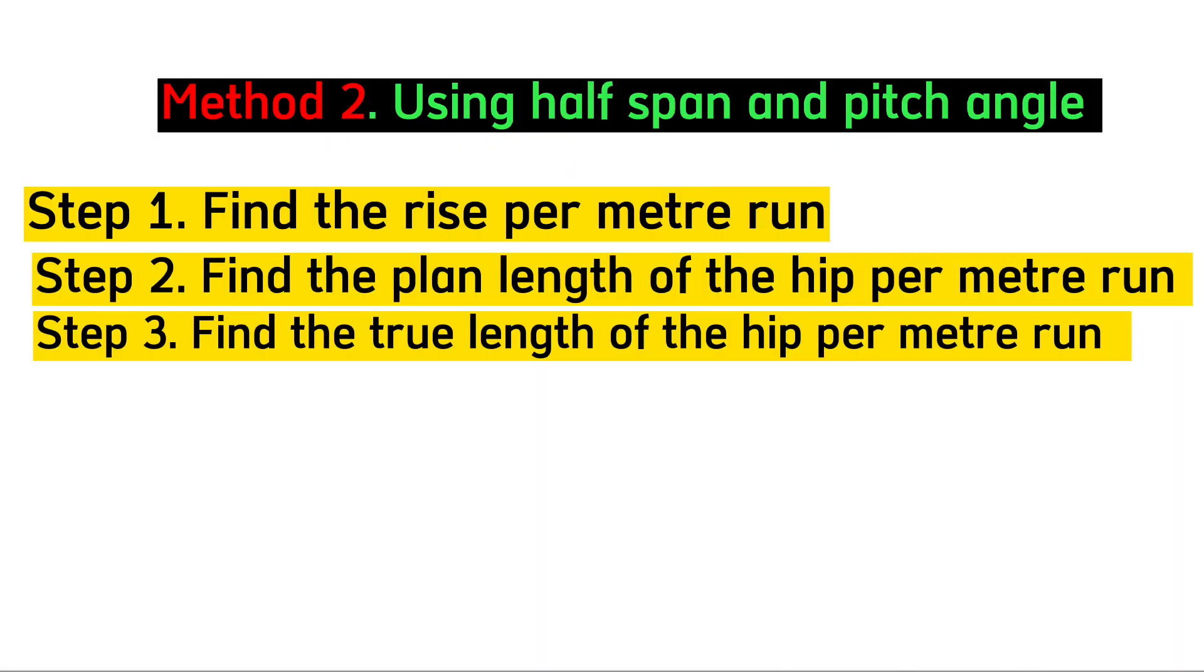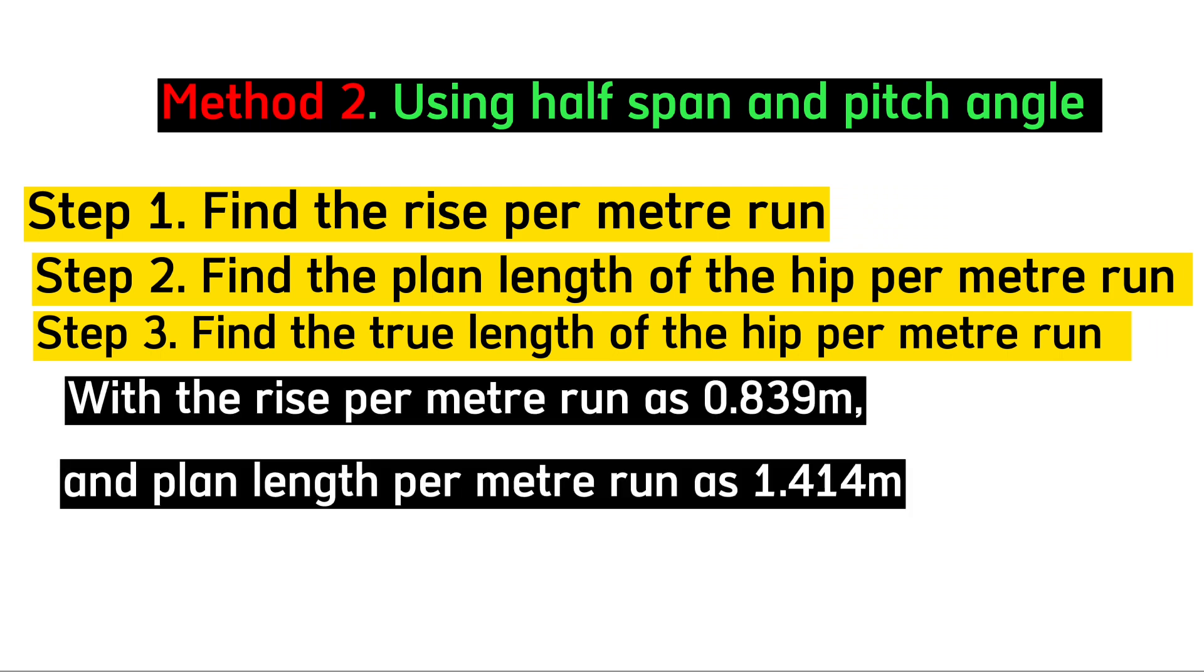The third step is to find the true length of our hip per meter run. With the rise per meter run as 0.839 meters and our plan length per meter run as 1.414 meters, we can determine the true length of our hip using Pythagorean theorem.